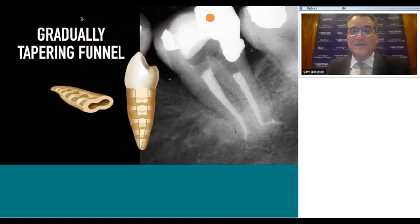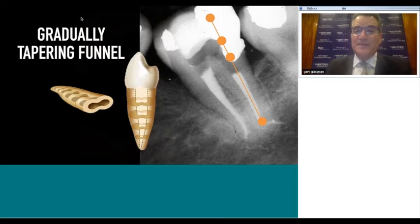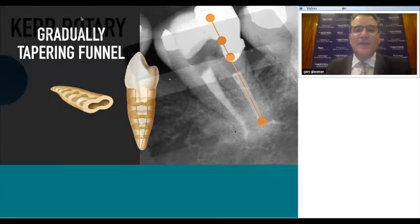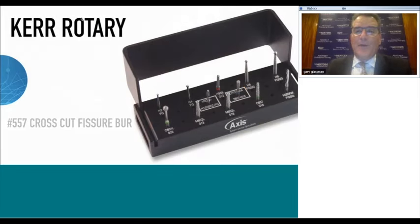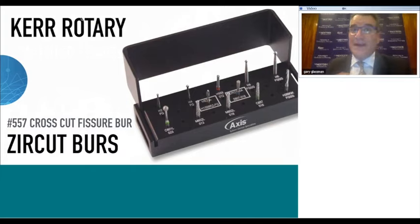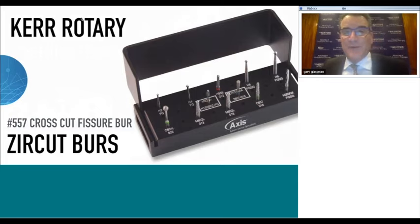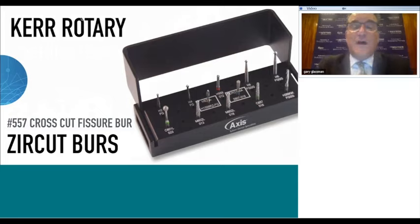The mechanical objective is to create a gradually tapering funnel with a series of decreasing diameters, smallest at the apical terminus, removing all dentinal restrictions coronal to it so instruments passively approach the apex. My favorite burr is the 557 Crosscut Fissure Burr—great for getting through metal, composites, amalgam restorations, enamel, and dentin alike.